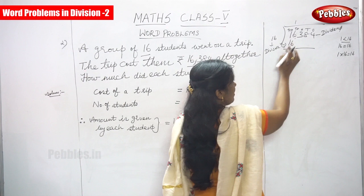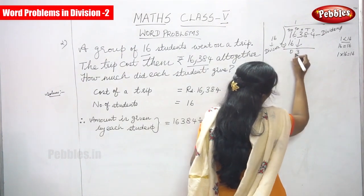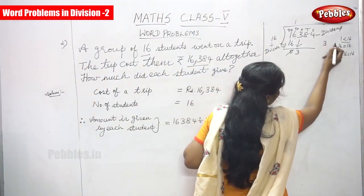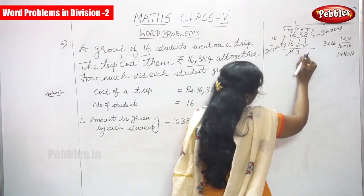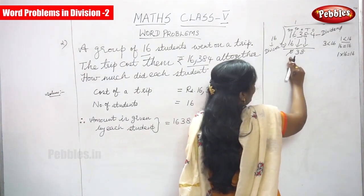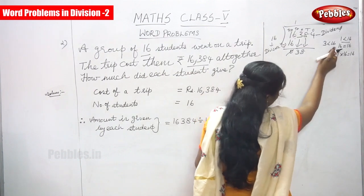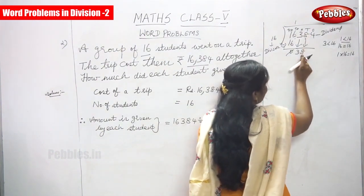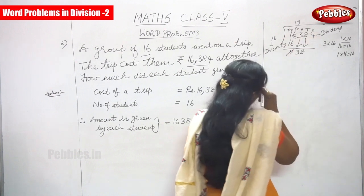16 minus 16: 6 minus 6 is 0, and 1 minus 1 is 0. Go to the next digit, that is 3. Compare 3 and 16 — 3 is less than 16, so you can't divide. Bring down the next digit, which is 8. So the number becomes 38. Since you brought down two digits at a time, you have to put 0 here in the quotient.